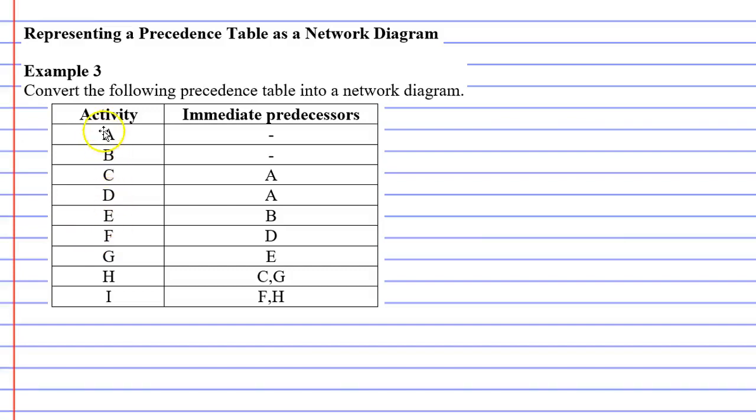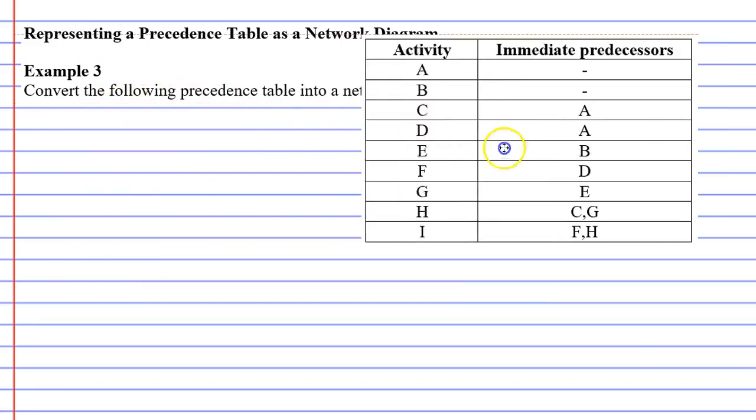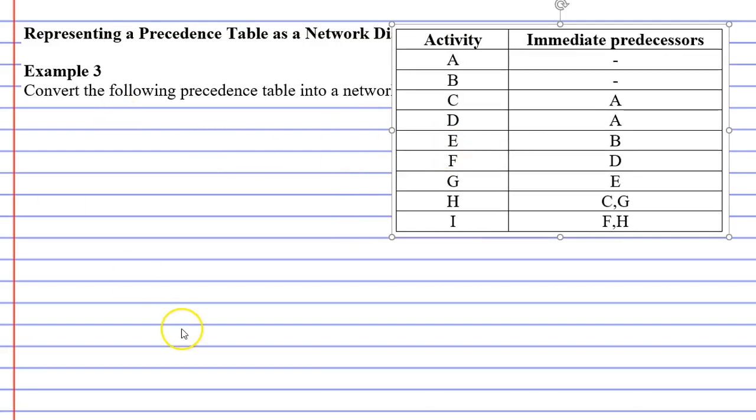In this video, we're going to complete example three. We need to convert the following precedence table into a network diagram. So first of all, I'm going to give myself a bit of room to do this. And we need to draw a vertex, which stands for the start of our project.